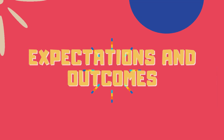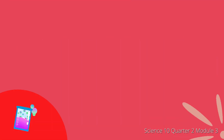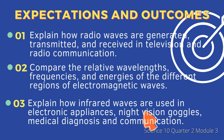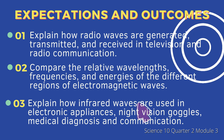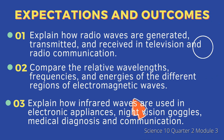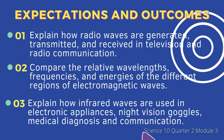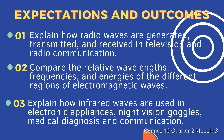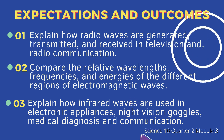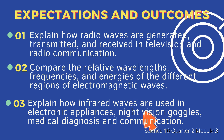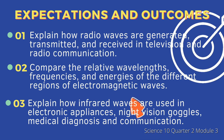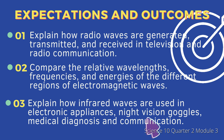Now let us move to the expectations and outcomes. 1. Explain how radio waves are generated, transmitted, and received in television and radio communication. 2. Compare the relative wavelengths, frequencies, and energies of the different regions of electromagnetic waves. 3. Explain how infrared waves are used in electronic appliances, night vision goggles, medical diagnosis, and communication.